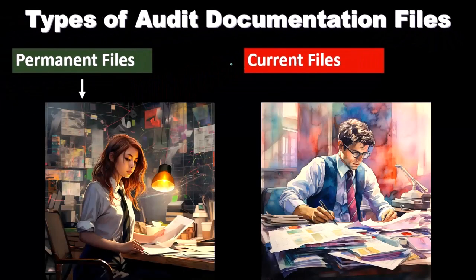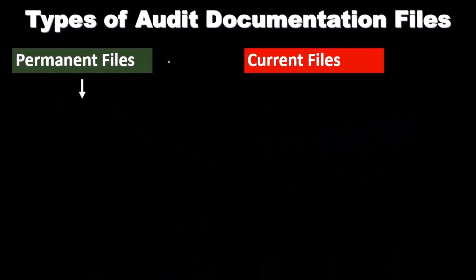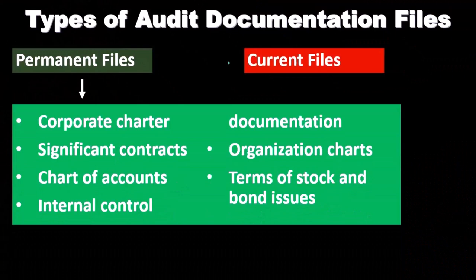The current file is going to be the current information that we're working on — the current audit, the current year. The permanent file is going to have the type of information that's going to be there for long periods of time. If you're setting up your auditing system for clients in public accounting, you want to think about what types of files aren't going to change — those go in the permanent file — and what types of files might change each year — those go in the current file.